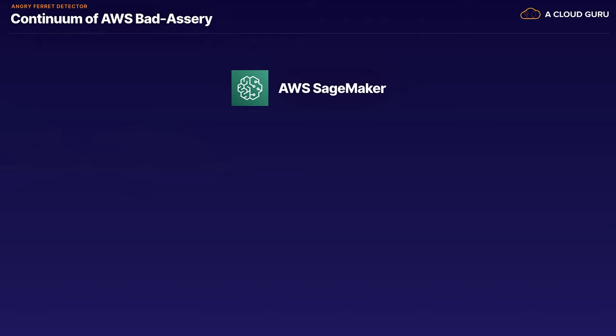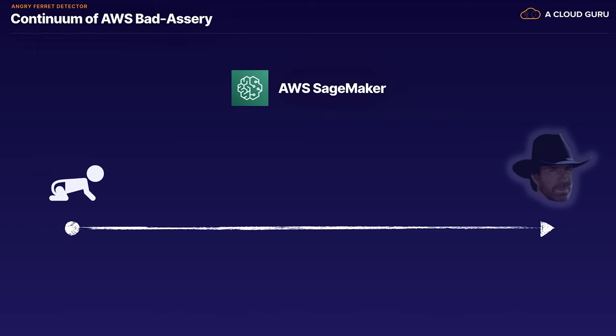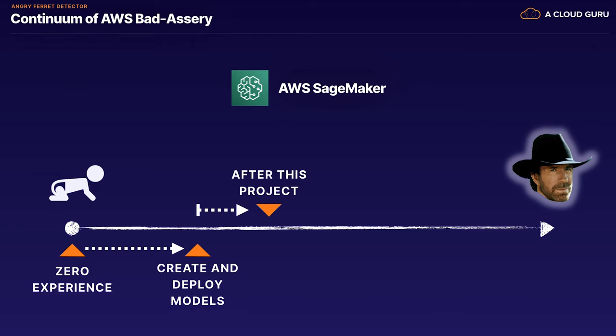You're going to need to know a little bit about SageMaker already to get the most out of this project. I can demonstrate this by pulling out the good old continuum of AWS badassery. It starts over here as a baby — babies don't know much — and it goes all the way up to the most badass of badasses, Chuck Norris. A baby would have zero experience with SageMaker. Maybe you know enough to create and deploy models, and this is really where you need to be. Through this project I'm going to progress you along this continuum. After this project, you'll know how to consume models and algorithms from the AWS Marketplace, as well as publish your own. If you don't have this baseline SageMaker knowledge, I'd encourage you to check out our certified machine learning specialty course, specifically chapters six, seven, eight, and nine.